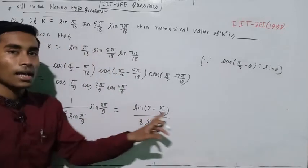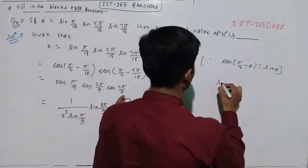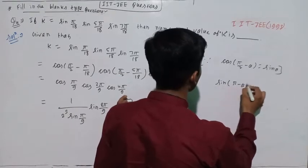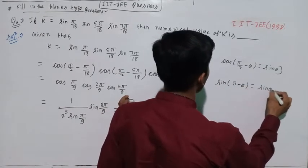Again, the identity is used: sin(π - θ) equals sin θ in positive value.